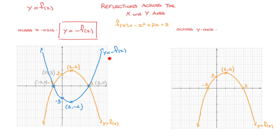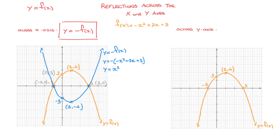That's the curve y equals the opposite of f of x. If ever we need to find this new curve's equation, all we have to do is consider the opposite of f of x. This function's equation is y equals the opposite of, in parentheses, the expression for f of x — that's negative x squared plus 2x plus 3. Opening up the parentheses by taking the opposite of every single term gives us y equals x squared minus 2x minus 3.